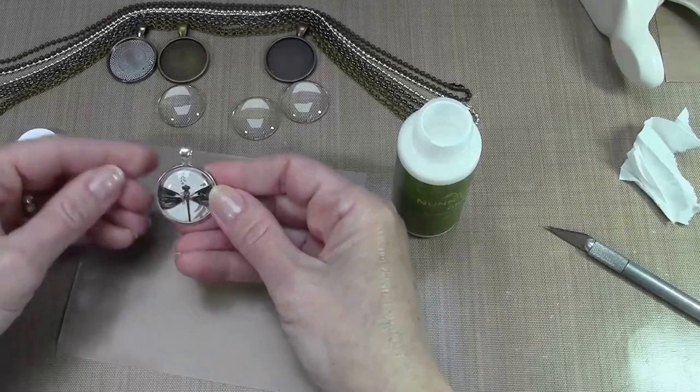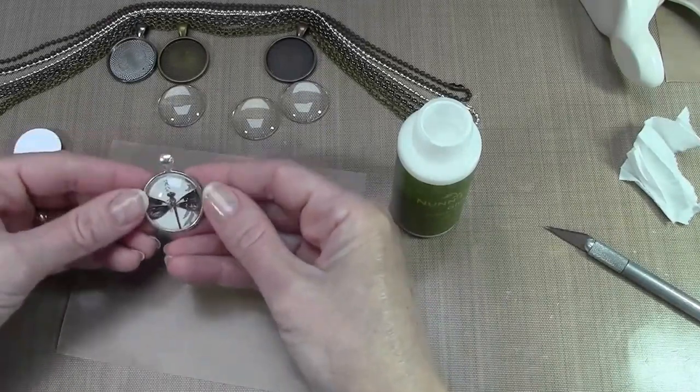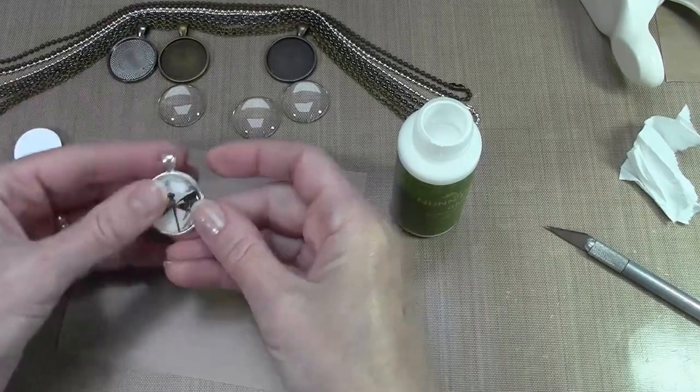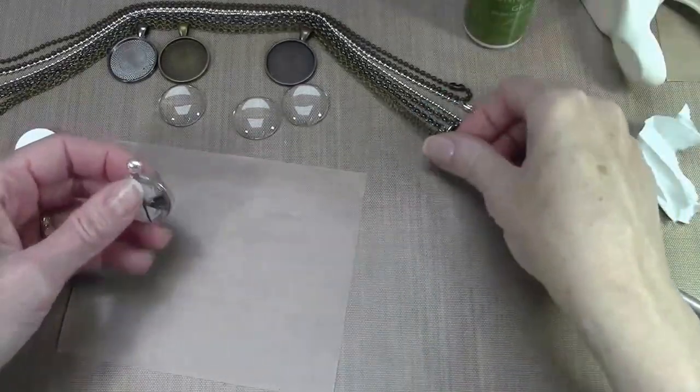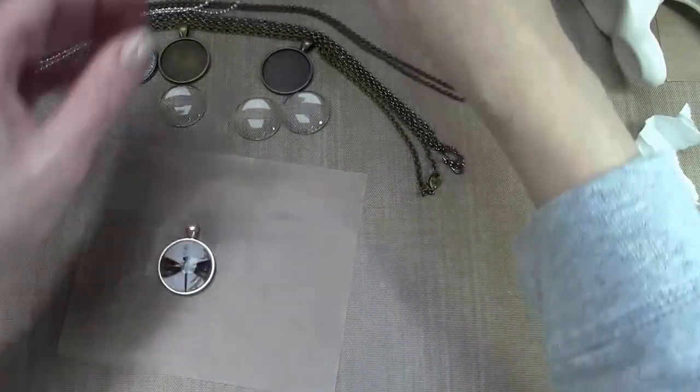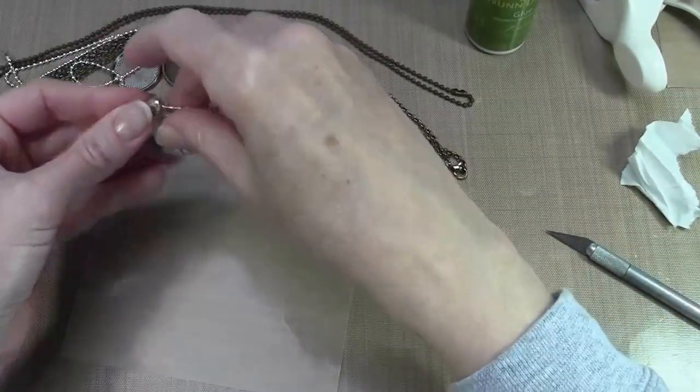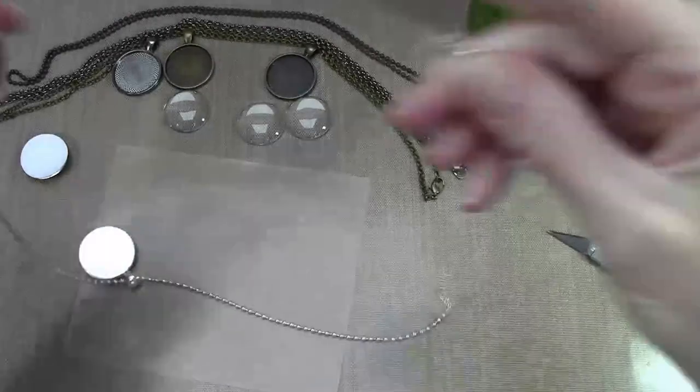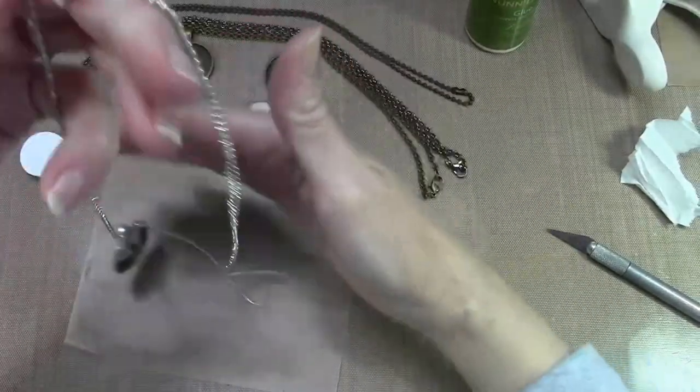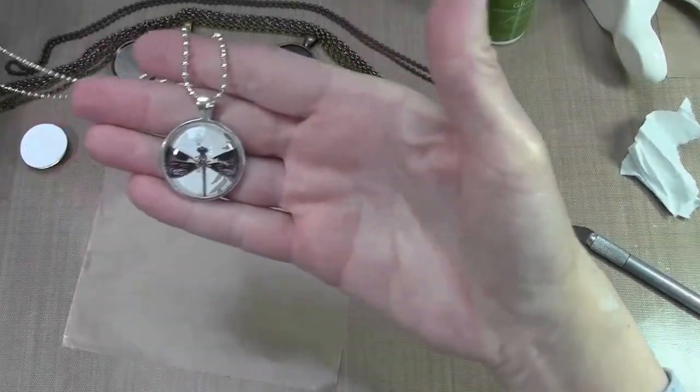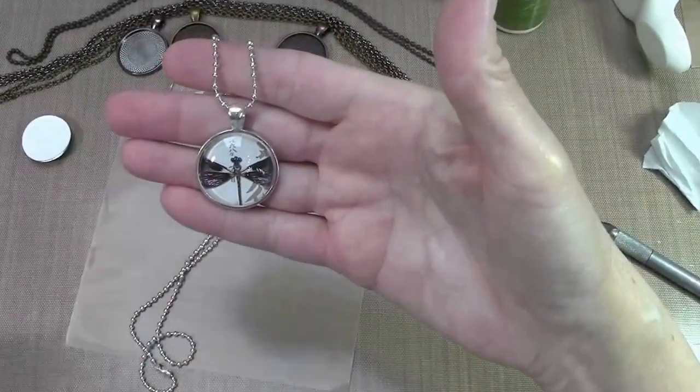Once it's dry, you can give it a good clean—the glass dome—with a little Windex or some soap and water. And then all you have to do is pick your chain and thread it through. And it's as quick and easy as that. And you got a quick little pendant that you can give to a friend with a matching card.